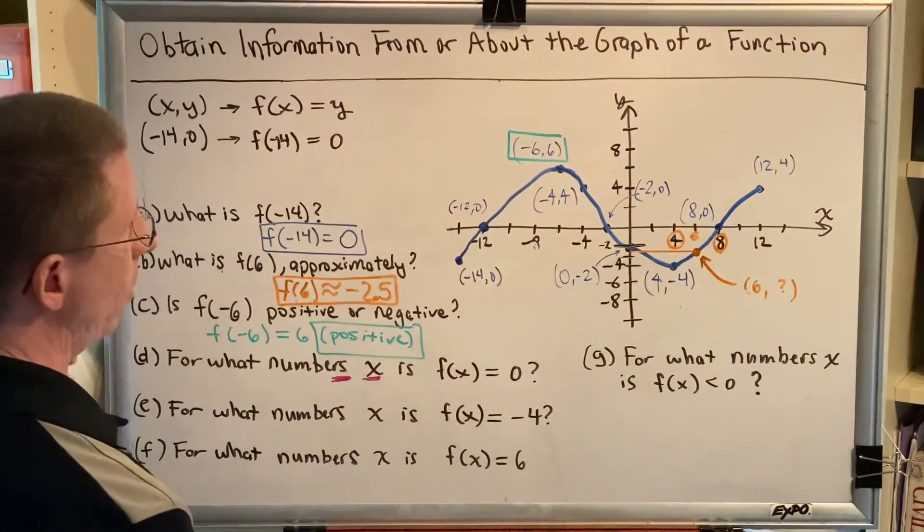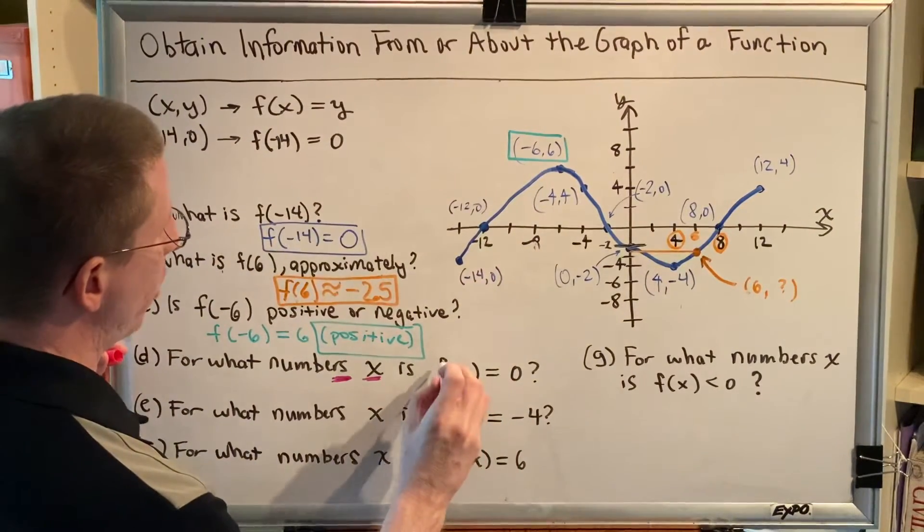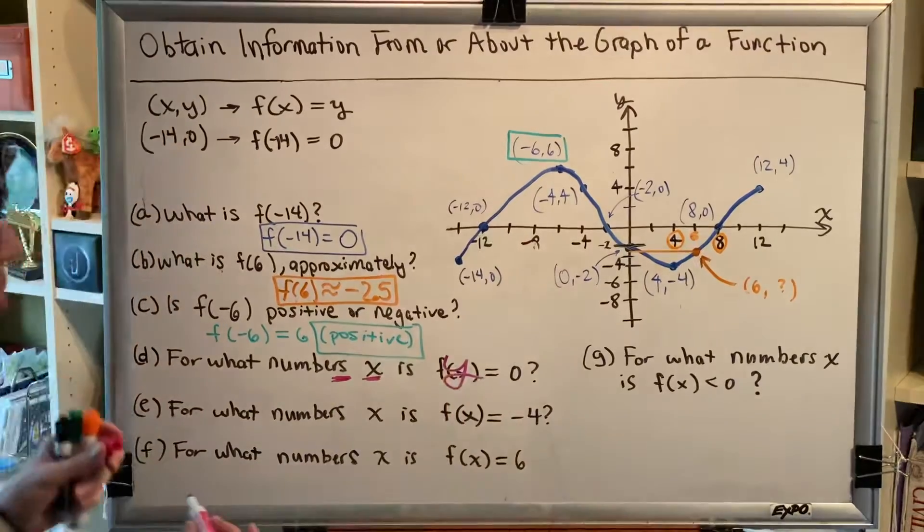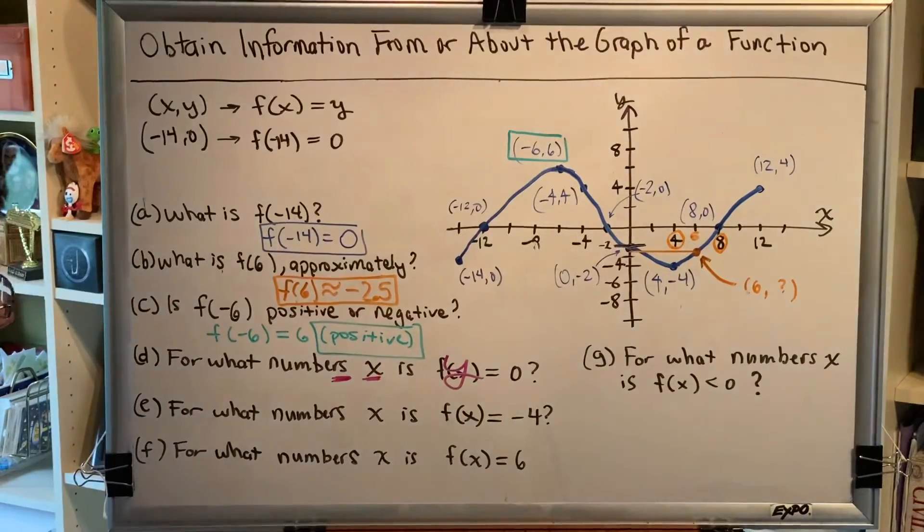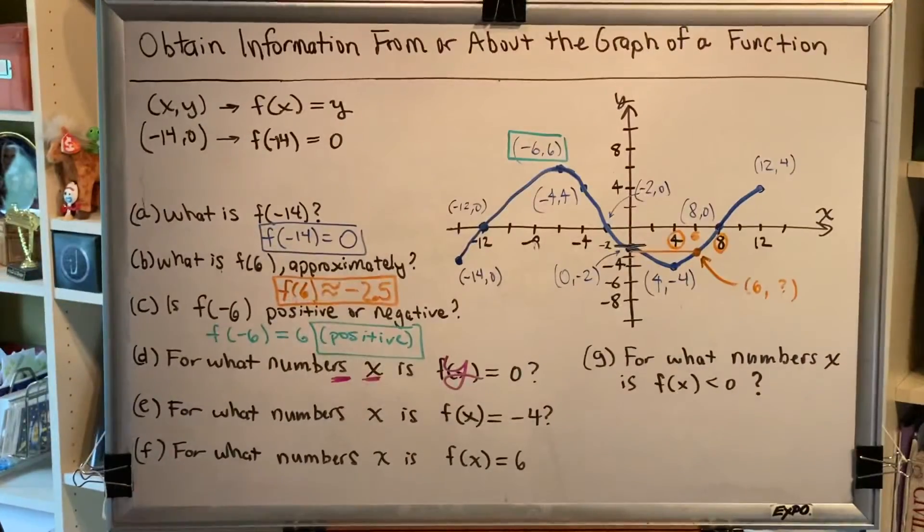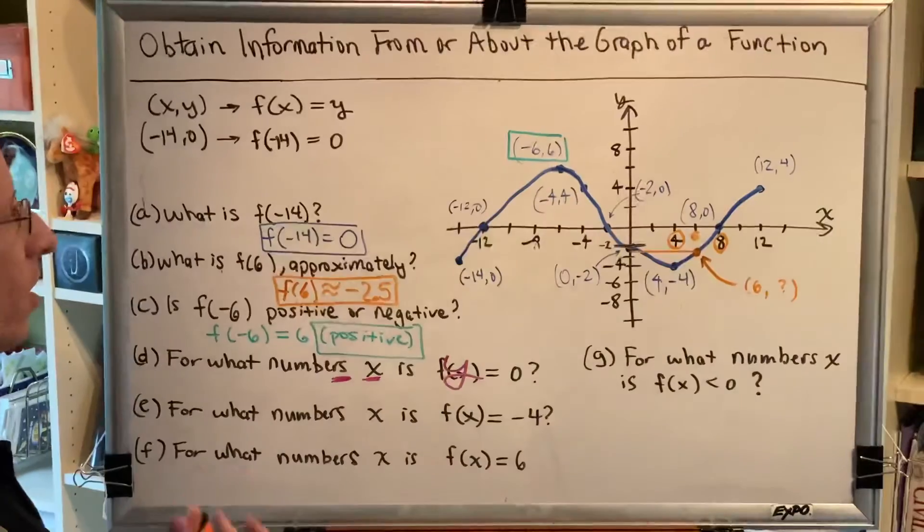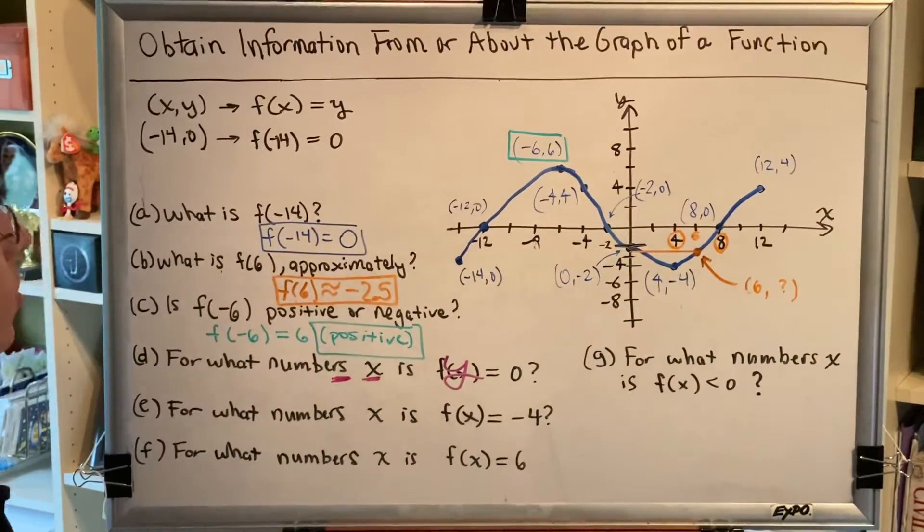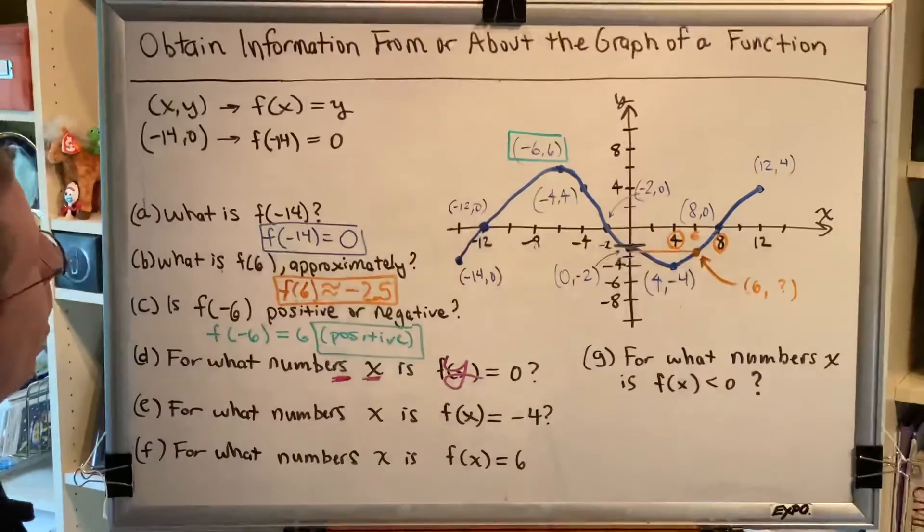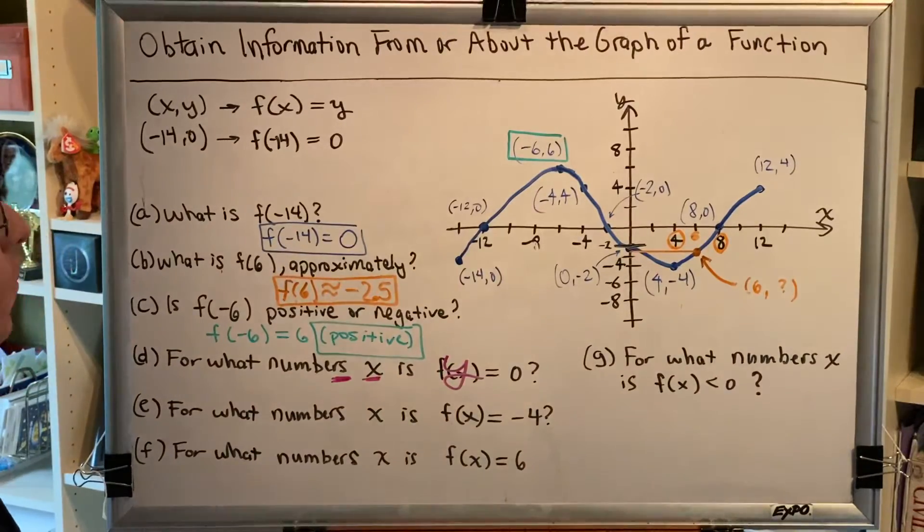So when this says f(x) equals zero, one way you can think about that in your mind is to say, well, this is just y is zero. And if you think about it, if y is zero, that must mean we're sitting on top of the x-axis. So what are the points from our graph that are sitting on top of the x-axis?